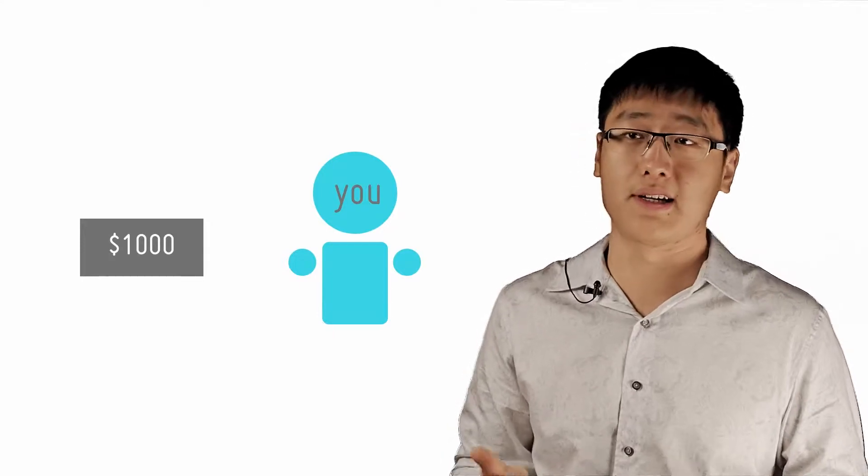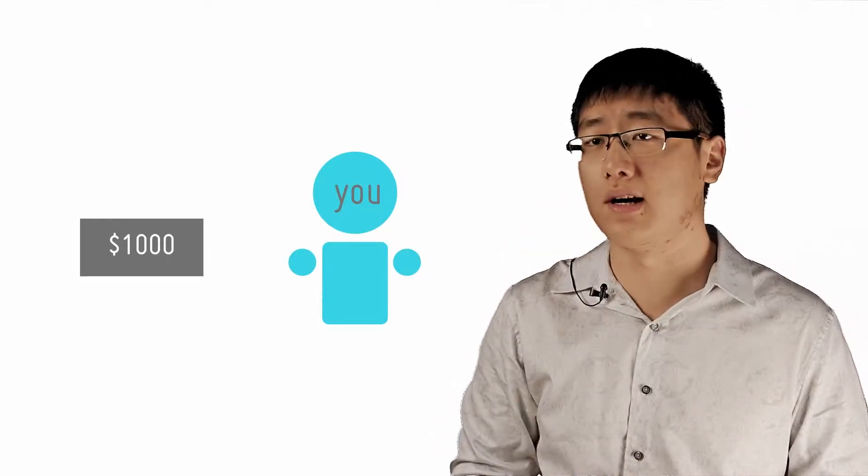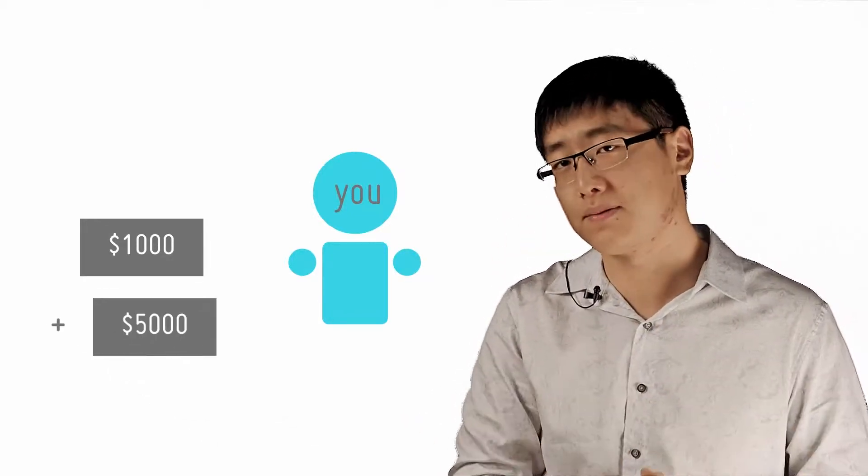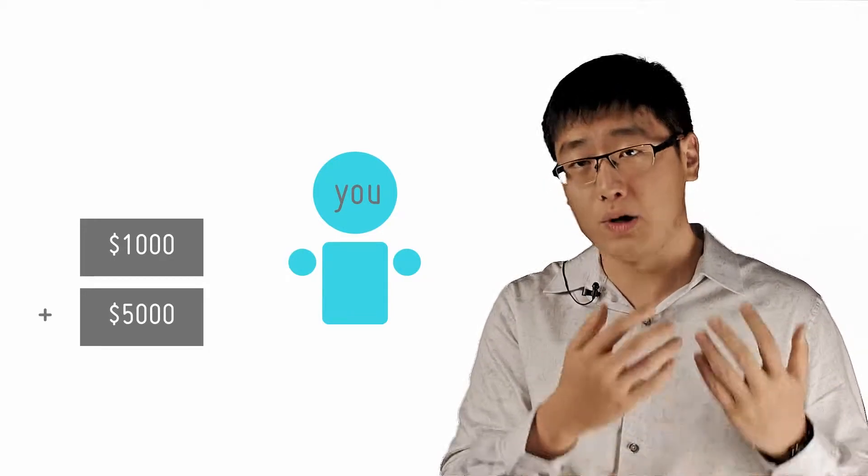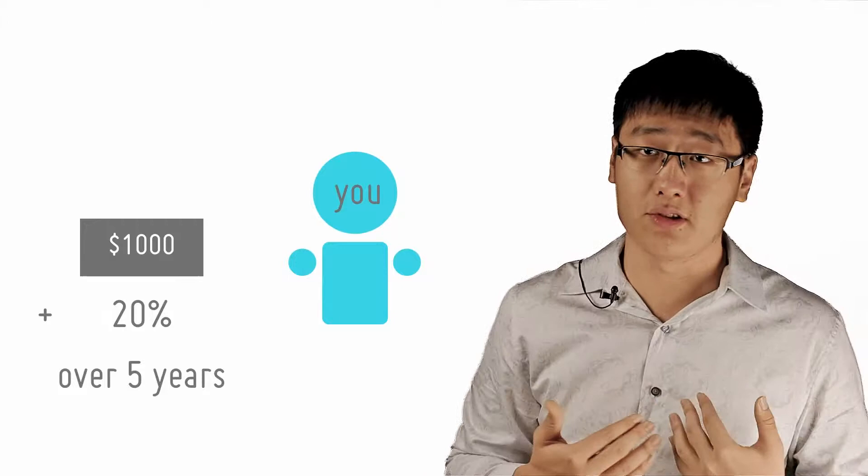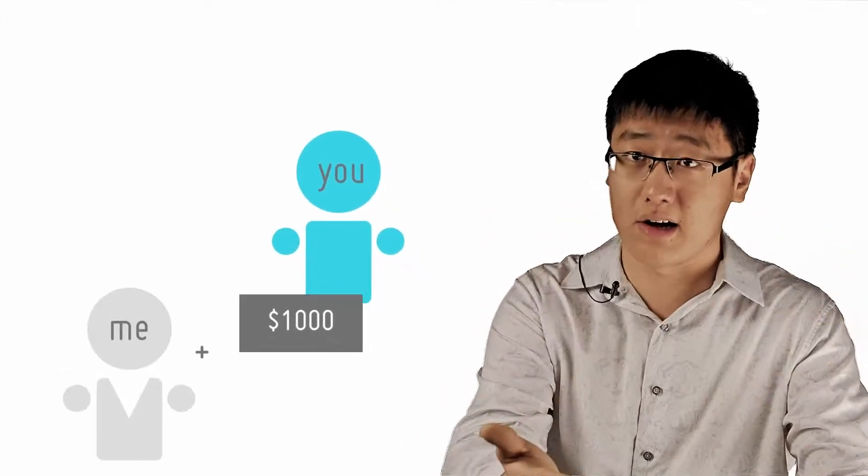That's an opportunity cost incurred by lending me the money. So you will probably want me to return you $6,000 to compensate you instead of just $5,000 after five years. So you impose a 20% interest rate over five years. So when you lent me $5,000 now, I return you $6,000 later.